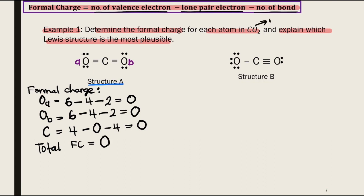We calculate the total formal charge by adding all the formal charges together, and we get a total formal charge of 0. This makes sense because carbon dioxide is a neutral molecule, so its total formal charge must equal 0.